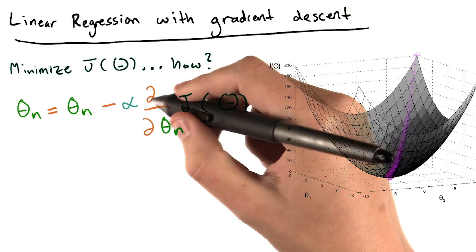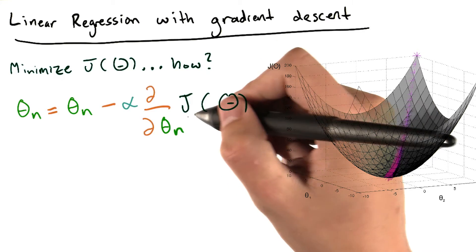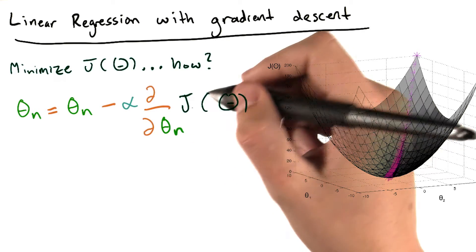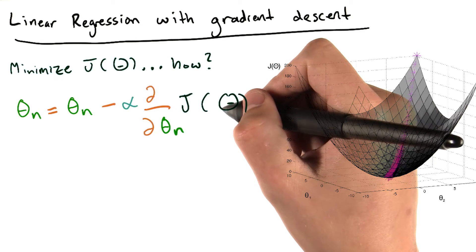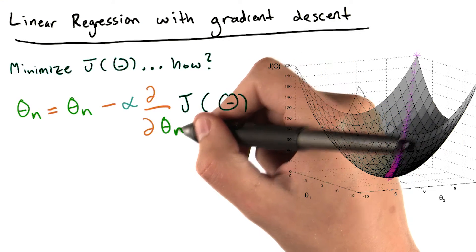Note the derivative here, d d theta n of J of theta. If you're less familiar with calculus, this is calculating the rate of change of J with respect to this particular theta n.